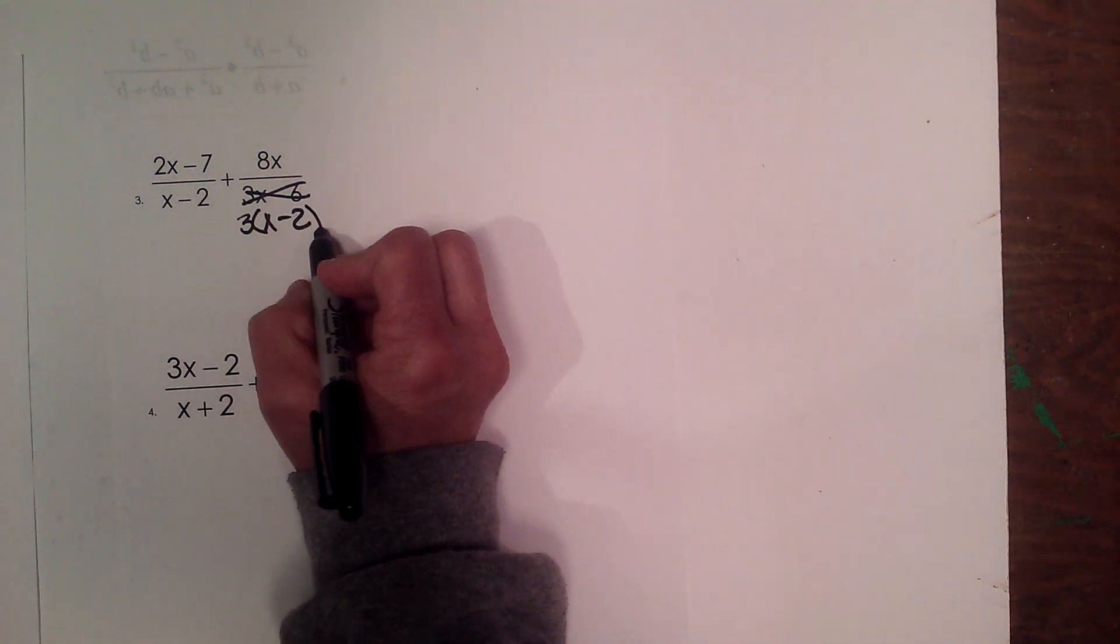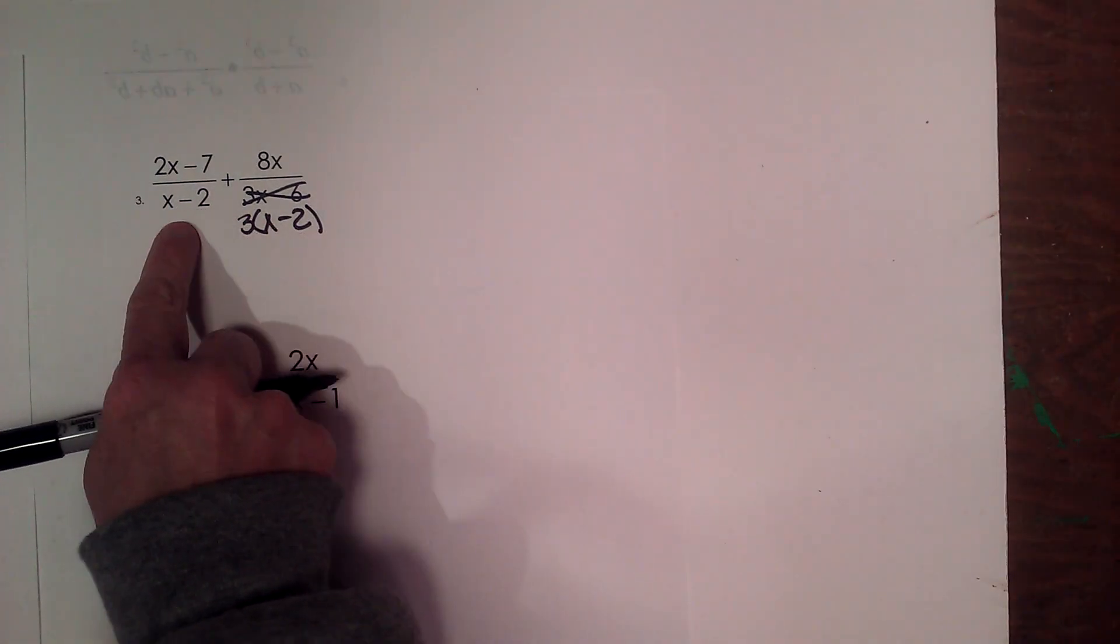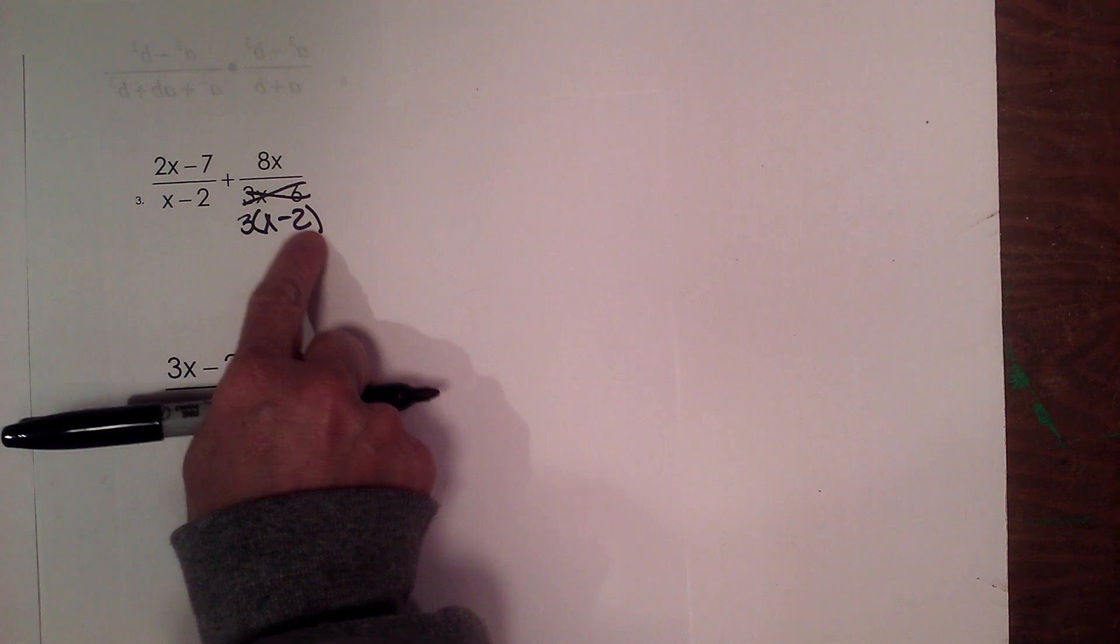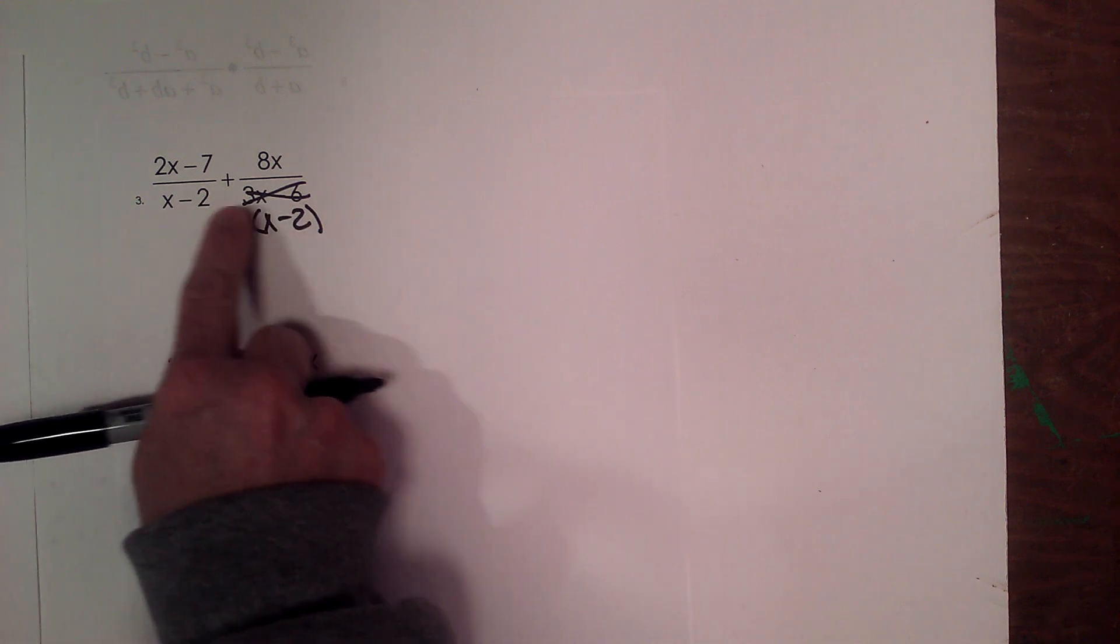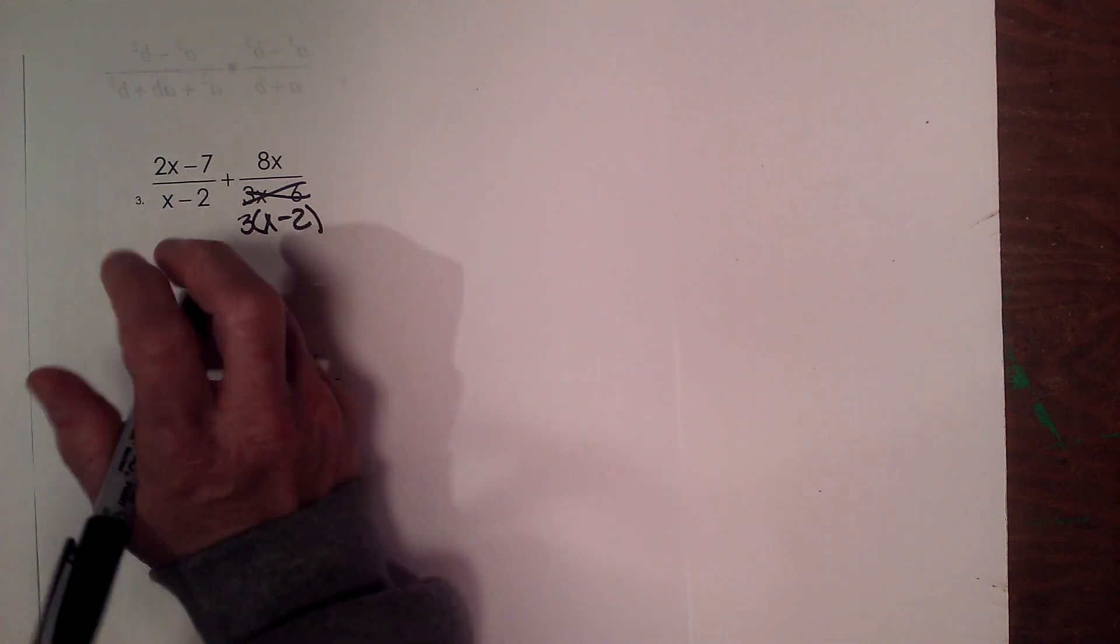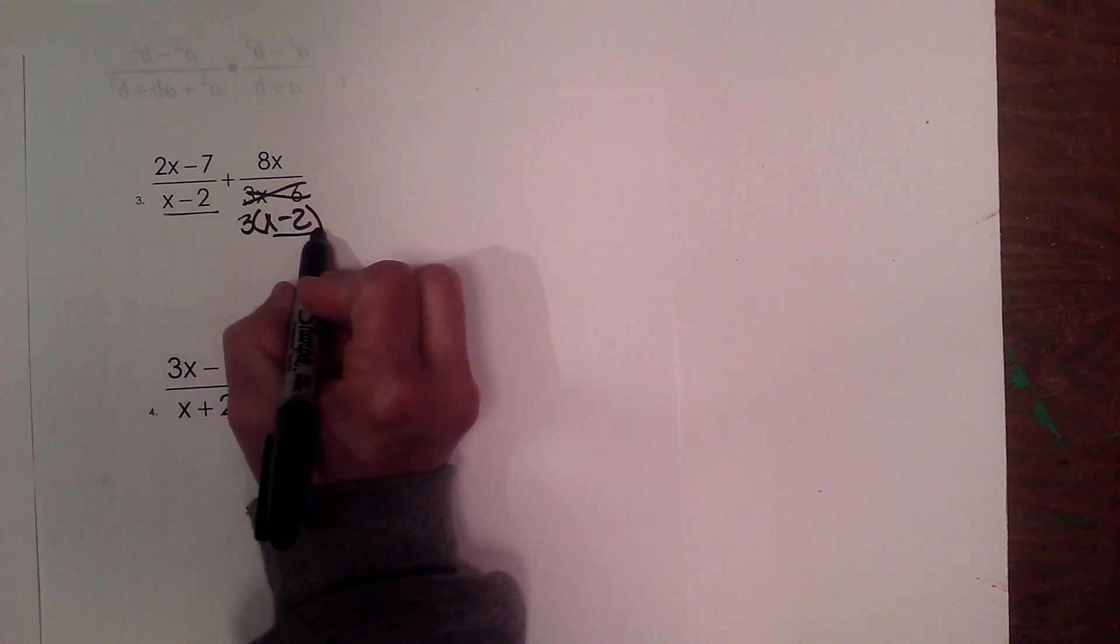So now I can see I have a common factor between each of these denominators. This one is x minus 2, this one's 3 times x minus 2, so this x minus 2 is common.